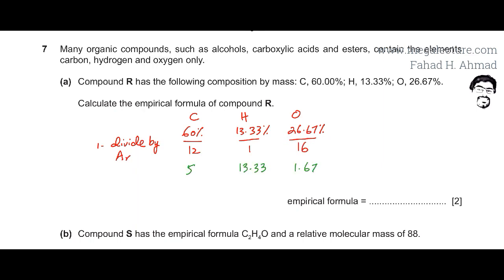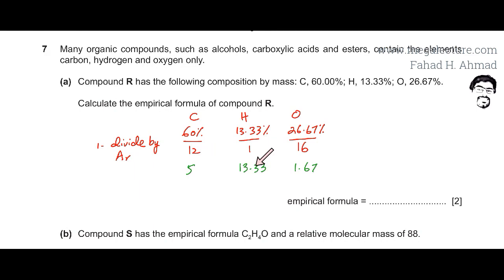So I am getting three answers: 60 divided by 12 is equal to 5, 13.33 divided by the AR of hydrogen is 13.33, and 26.67 divided by 16 is 1.67.